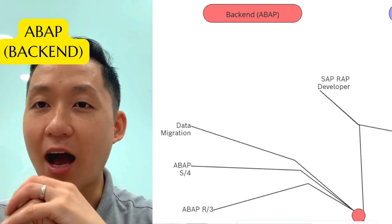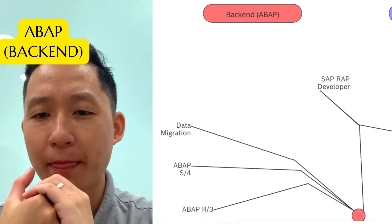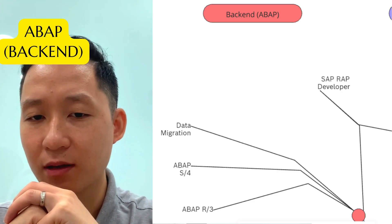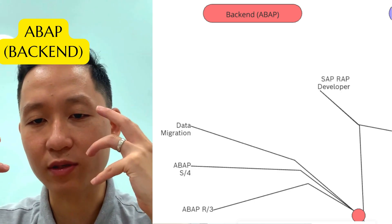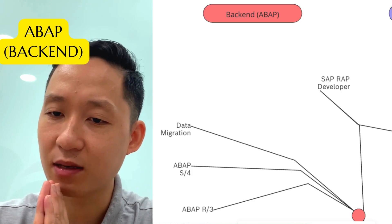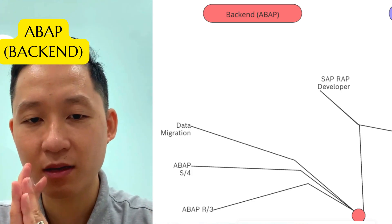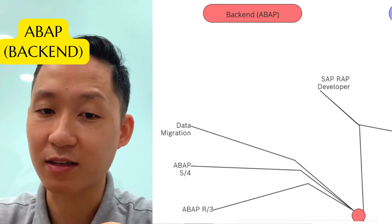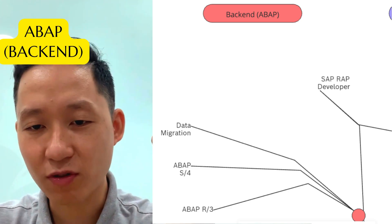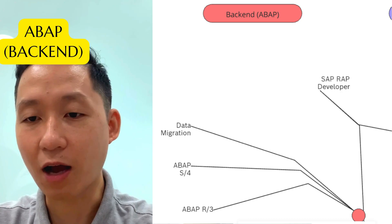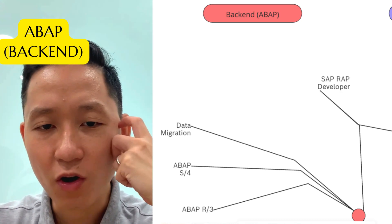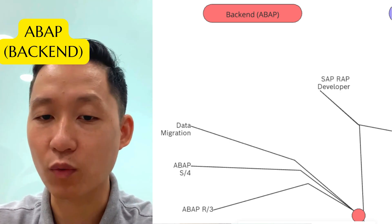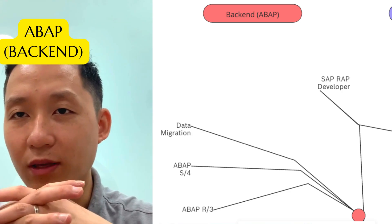First up is ABAP, the backbone of SAP. ABAP stands for Advanced Business Application Programming, and it's the language used to build most of SAP's core applications. If you enjoy coding, programming, and working with the foundation of SAP systems, this is a great path to consider. Here you can specialize in data migration — transitioning a company's data to a new system — or you can work with SAP ABAP S/4 or ABAP R/3, depending on the version of SAP you're working with.